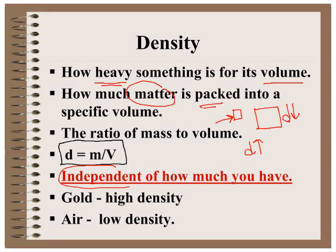Density is independent of how much you have, because as the mass changes, the volume changes in the same ratio. So things like gold, where the matter is packed very tightly, have a high density. Air, where the matter is not packed as tightly, has a low density.